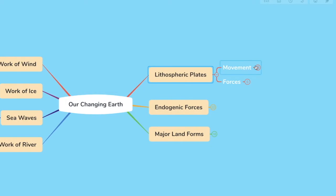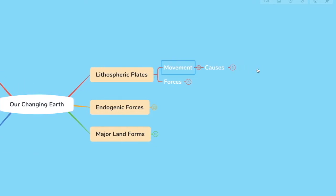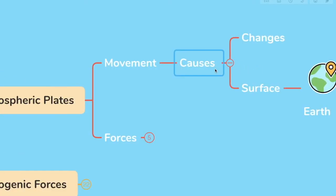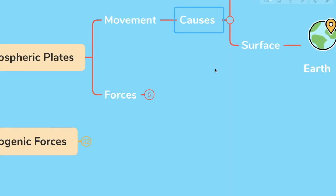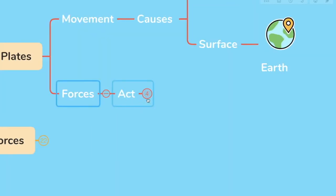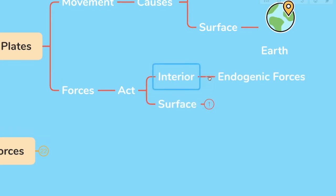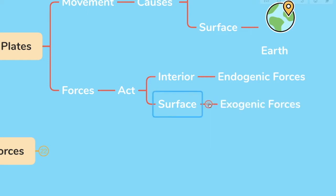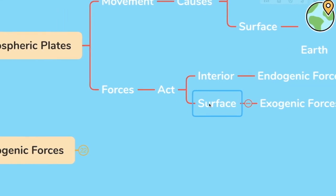The movement of the lithospheric plates causes changes on the surface of the earth. The forces which act in the interior of the earth are called endogenic forces and the forces which act on the surface of the earth are called exogenic forces. Let's move forward.